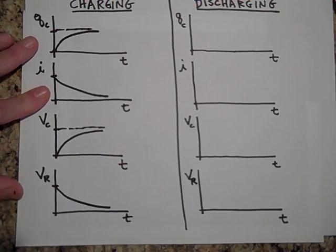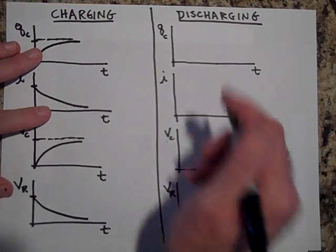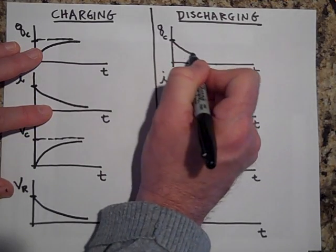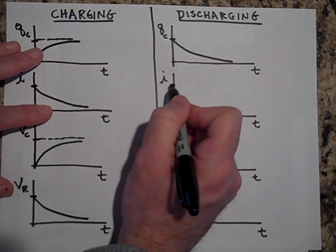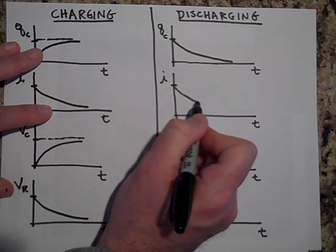Whereas if you have a discharging capacitor, then the charge is depleting. So is the current in the resistor, it's depleting.